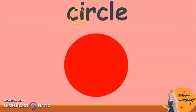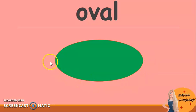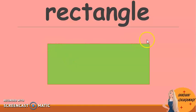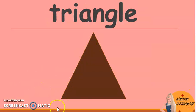First one. Circle. Oval. Square. Rectangle. Triangle.